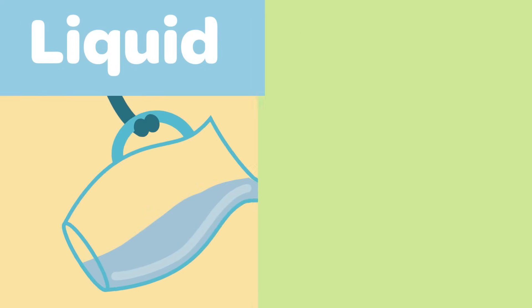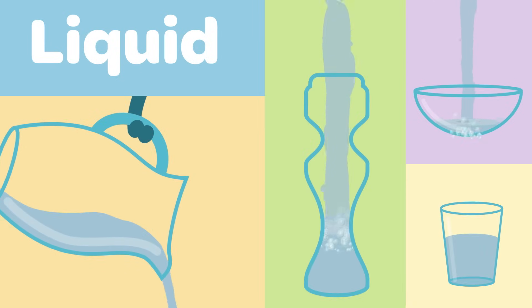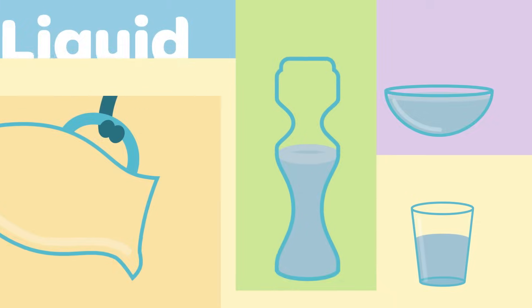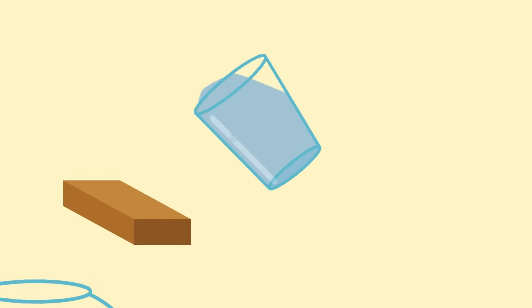A liquid, on the other hand, will always change its shape. It changes shape to fit the shape of the container it's put in. A liquid can flow, which means it can be poured.